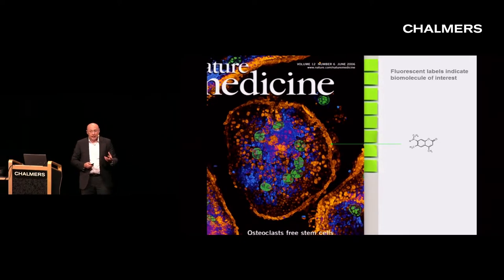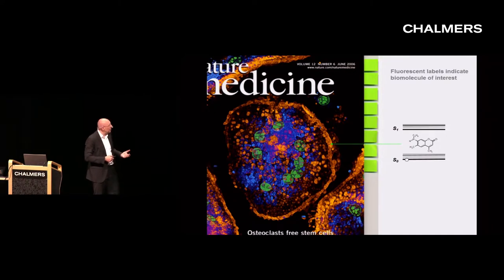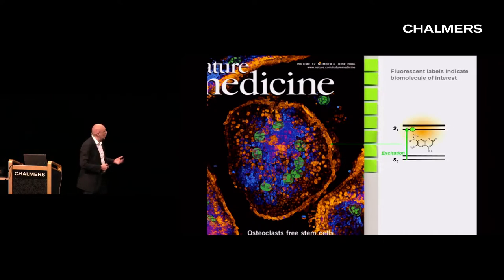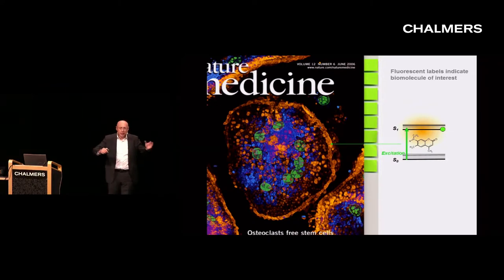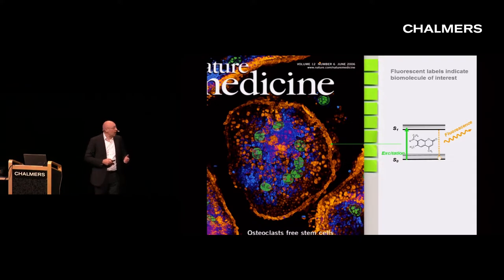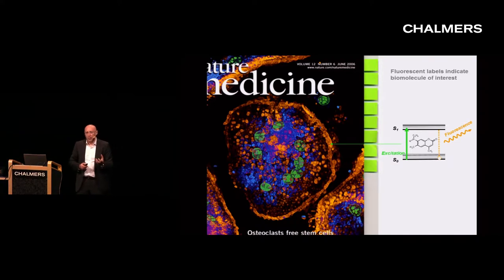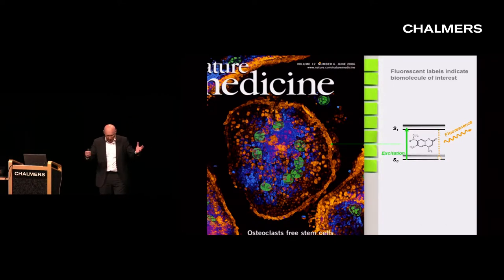If we attach that fluorescent label, we can see the fluorescence generated by it. The label usually has an electron ground state and an excited state. If you shine light on it — for example, green light — it can absorb a photon. The molecule is excited, goes up to the first electron excited state, the atoms wiggle a bit, causing some energy loss, and when the molecule comes down, it emits a photon that is redshifted in wavelength. This makes fluorescence microscopy extremely sensitive — you can easily separate the fluorescent molecules from the surrounding.